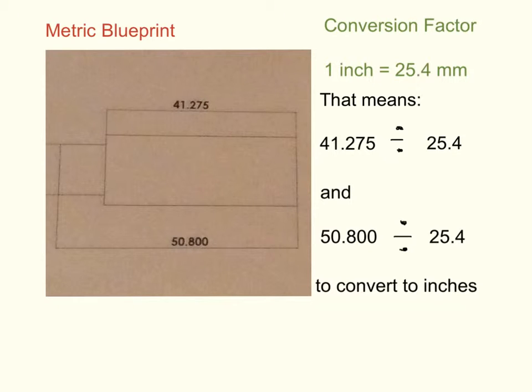So here's a close-up of our metric blueprint from the video with dimensions of 41.275 millimeters and 50.800 millimeters. And remember, our conversion factor is one inch equals 25.4 millimeters. That means to convert this blueprint from millimeters to inches, we need to divide 41.275 divided by 25.4, and 50.800 divided by 25.4.